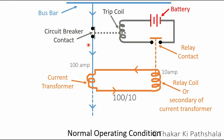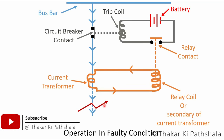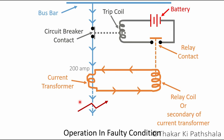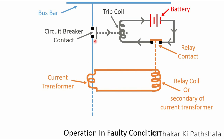Now let's say we have a fault. The current flowing through the CT will increase. Let's assume we have a fault of 200 amperes, so we will get 20 amperes on the secondary side, and that current will go into the relay coil. As this current is sufficient to produce enough magnetic force to pull the relay contact, the relay will close this contact. As soon as the relay closes this contact, the battery will energize the trip coil, and the circuit breaker contact will be pulled apart, stopping the current flow in the circuit.